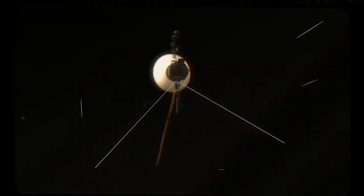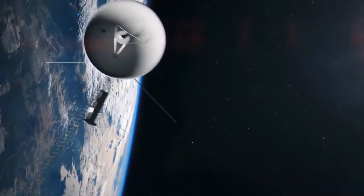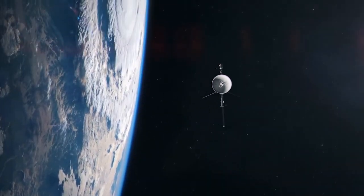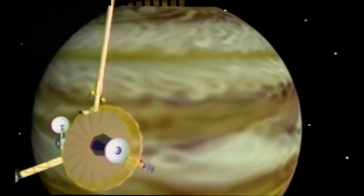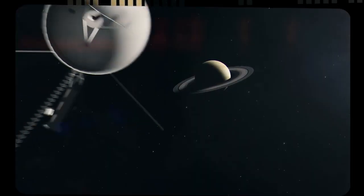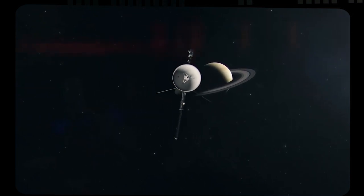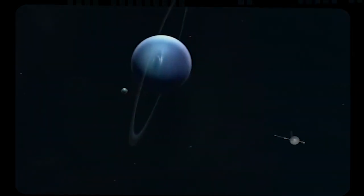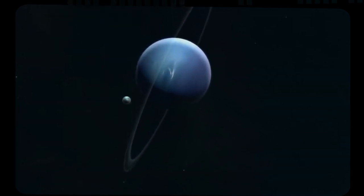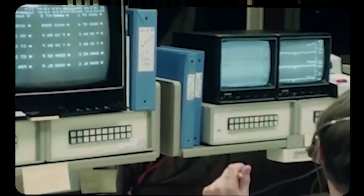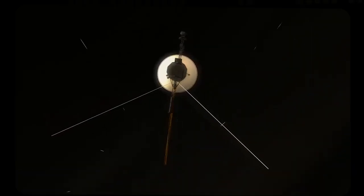Voyager 1 embarked on its mission with a specific objective to unravel the mysteries shrouding the gas giants of our solar system, namely Jupiter and Saturn. Little did we know that this humble explorer would go on to redefine our understanding of interstellar space. It was a mission designed to probe the outer boundaries of our celestial neighborhood, armed with a thirst for knowledge and a suite of scientific instruments ready to capture the wonders that lay beyond.